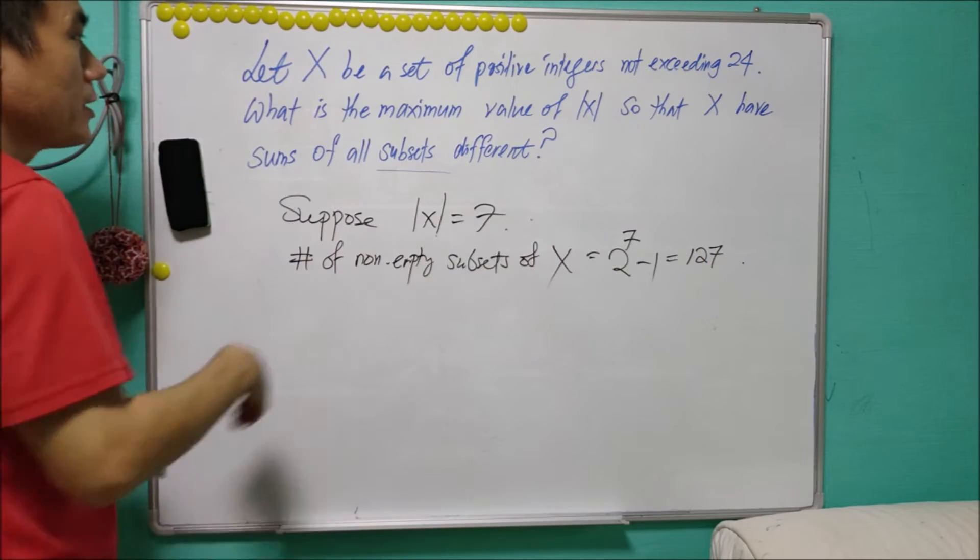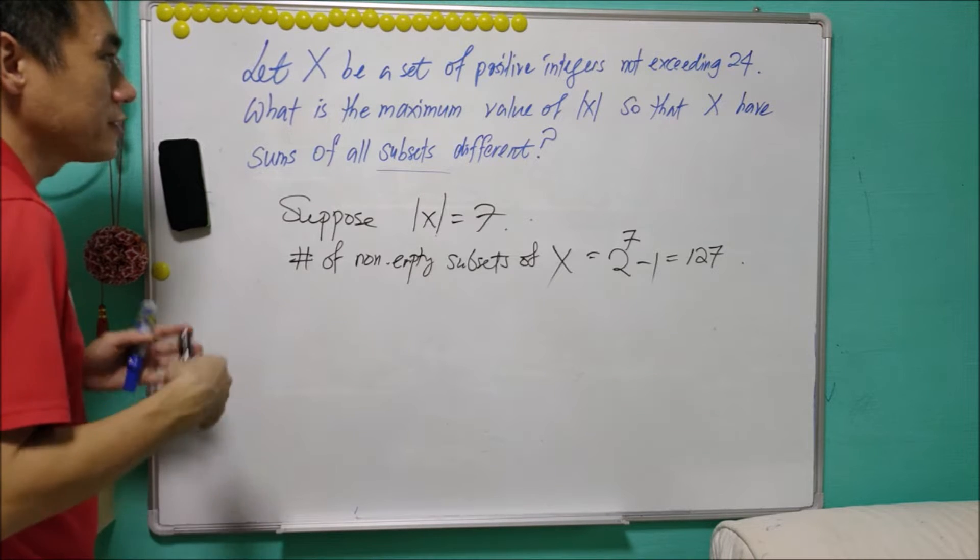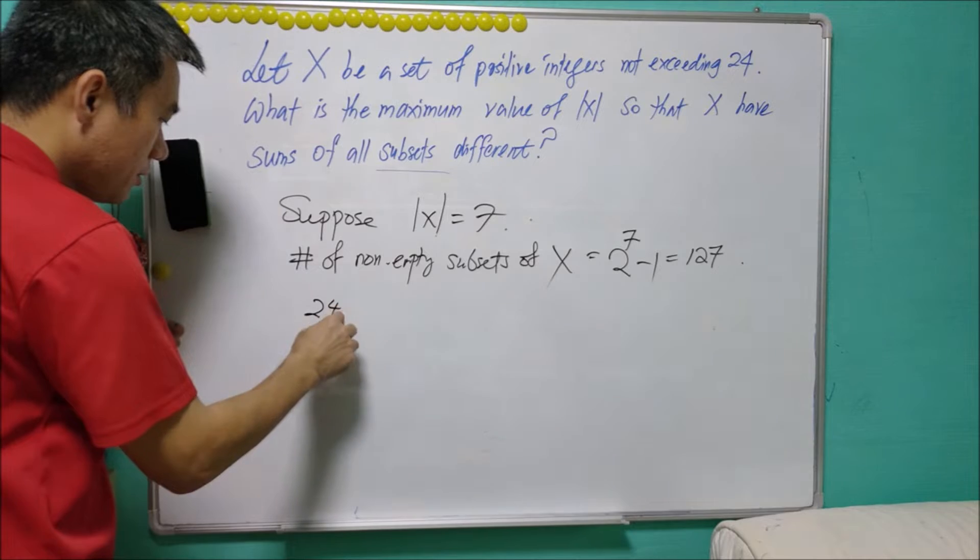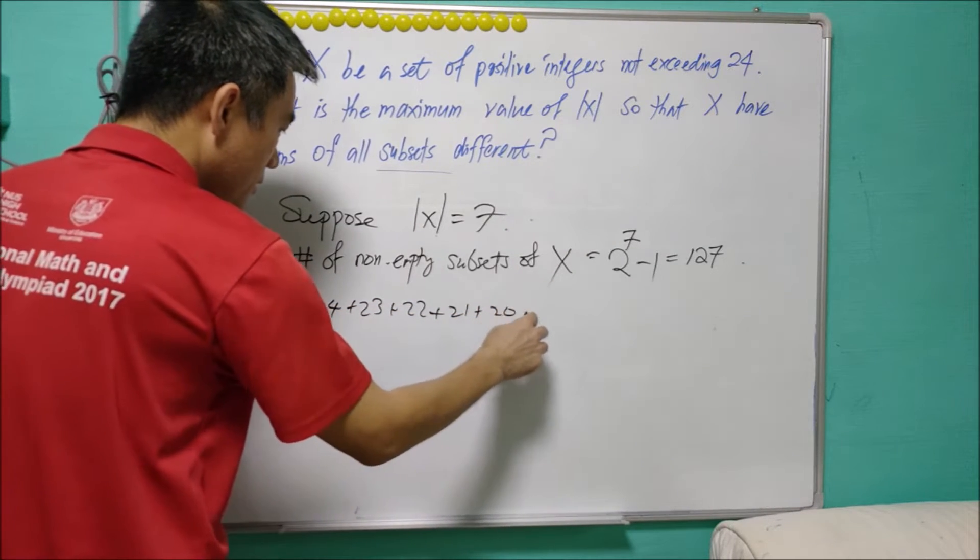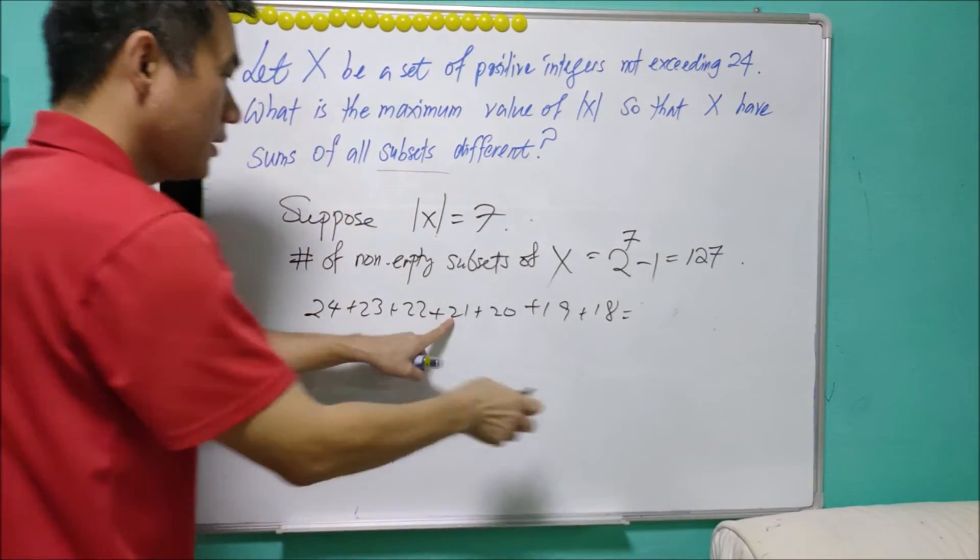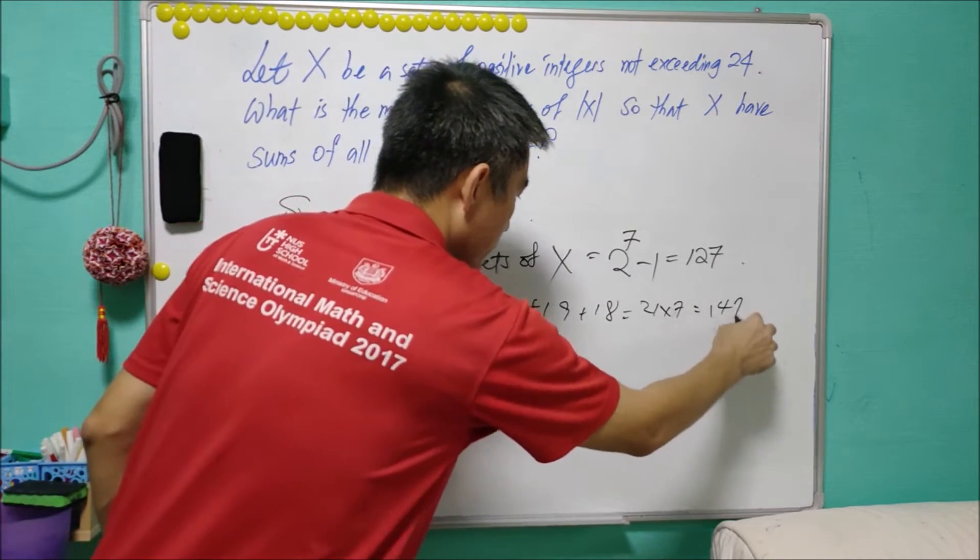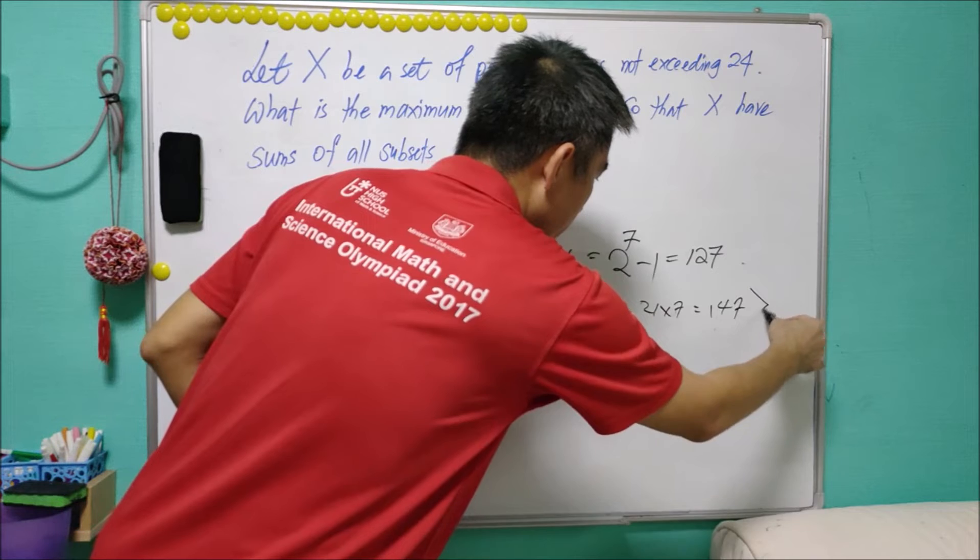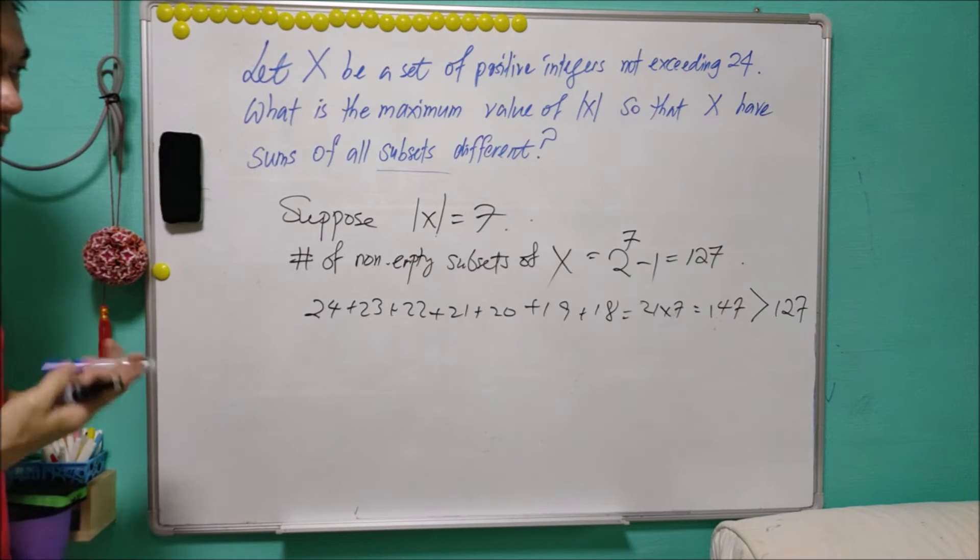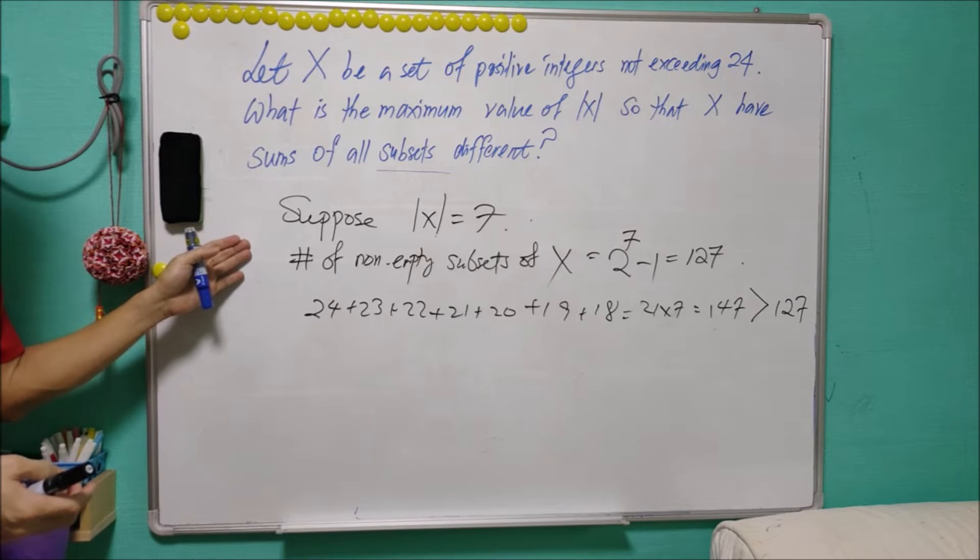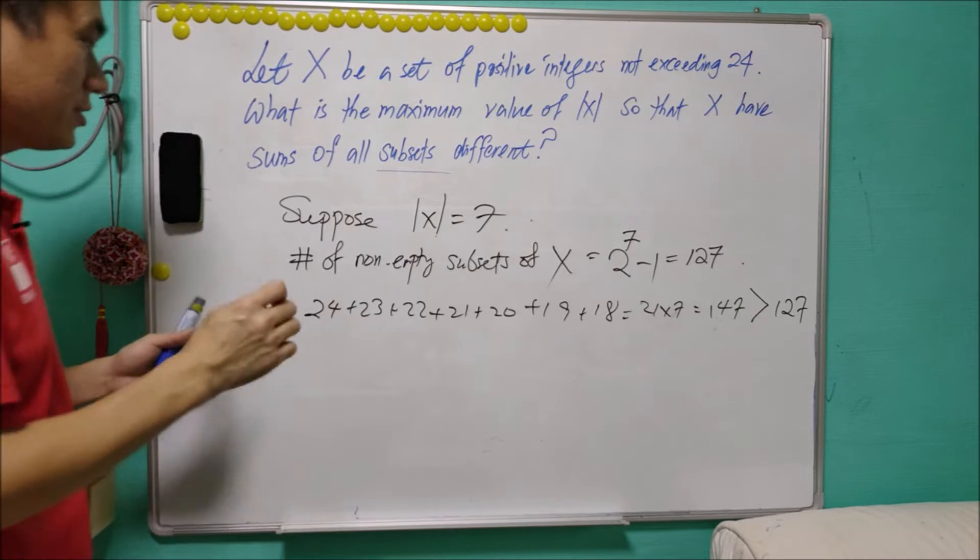What is the largest sum that you can have from 7 elements of positive integers not exceeding 24? It is 24 + 23 + 22 + 21 + 20 + 19 + 18. And this is actually 21 times 7, which is equal to 147. And note that 147 is greater than 127. So, in this case, it seems that we have more pigeon holes than the number of pigeons. So we can't say anything from pigeonhole principle.